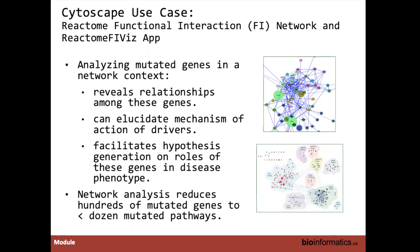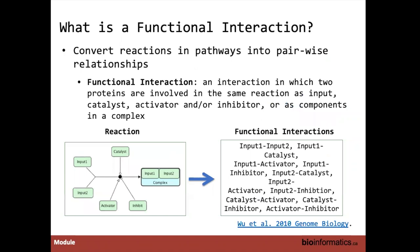Analyzing your list of genes or mutated genes in a network context allows you to understand relationships among genes, elucidate mechanisms of action of drivers, and examine interactions between drivers and rare mutations — facilitating hypothesis generation about gene roles in disease. The Reactome FI is a reliable biological network based on manually curated pathway interactions extended with verified interactions, essentially reducing hundreds or thousands of genes down to a dozen or so altered or mutated pathways.